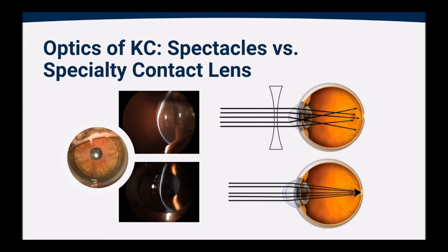Now, why do spectacles and traditional contact lenses not correct vision in individuals with keratoconus? Well, in individuals with advanced levels of keratoconus, the reason why a spectacle or a traditional contact lens does not correct the vision is because we're not doing anything to change the shape of that cornea. So no matter what prescription or intervention we put in front of the eye, that wavefront may be corrected coming from the back of the glasses, but then it still has to hit that irregular keratoconic cornea and then the light scatters from there.